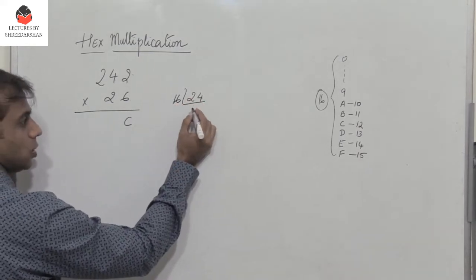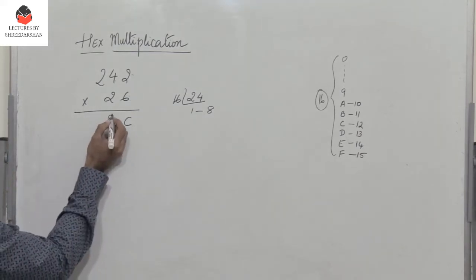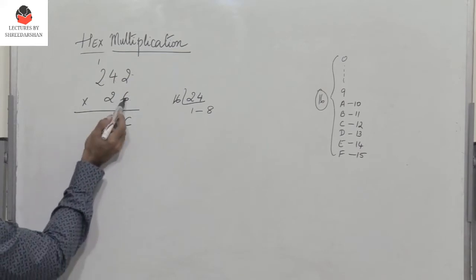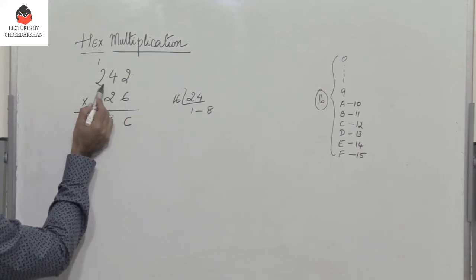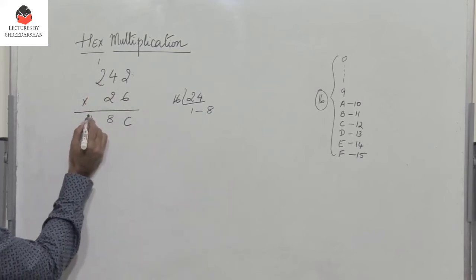So divided by 16, I get 1, 8. So what do I do? I write 8 and take the carry here 1. Again 6 into 2 is 12 plus 1. So 12 plus 1 is 13. So 13 is D.